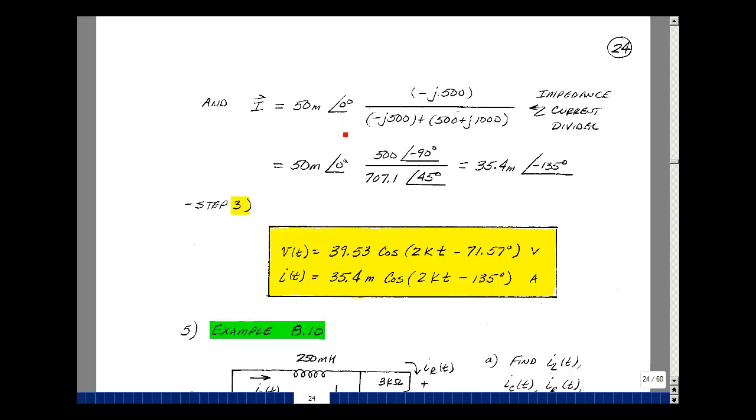50 milliamps at angle zero. We'll take the other impedance, which is minus J500, over the sum of that plus our 500 plus J1000. Found the denominator before. That was 707.1 at angle 45. The numerator, though, is 500 at an angle of minus 90. We're on the bordered line of the third and fourth quadrant.